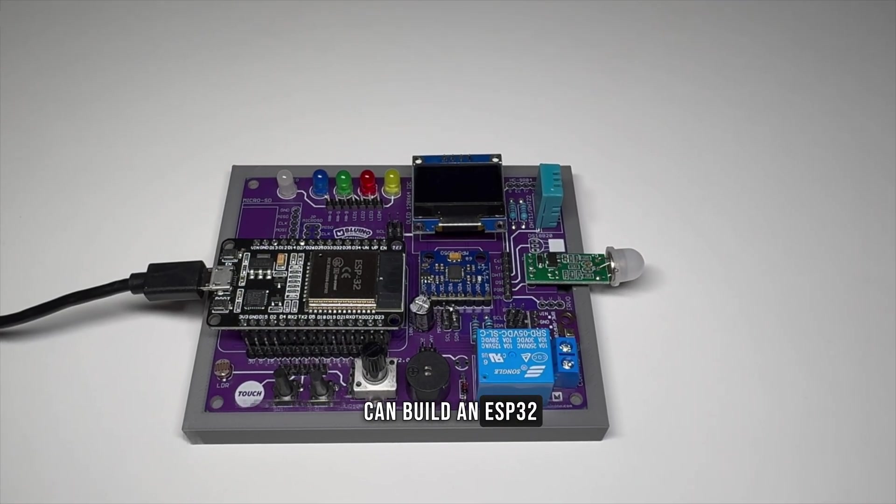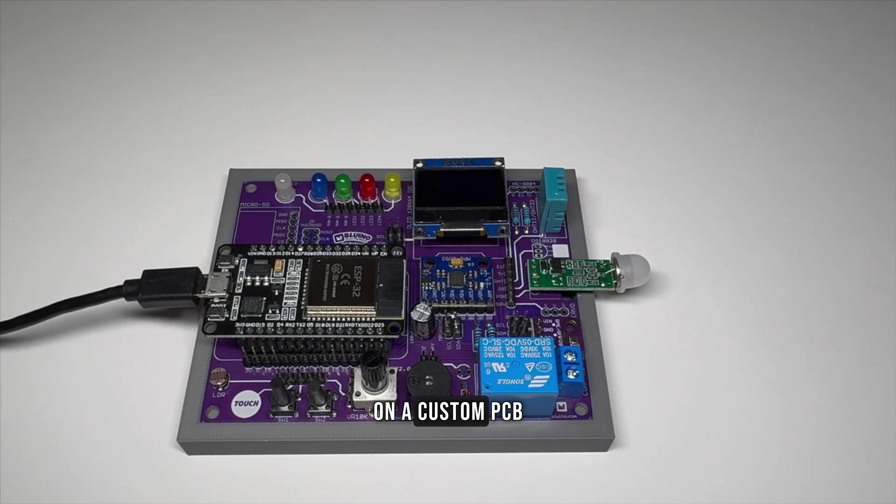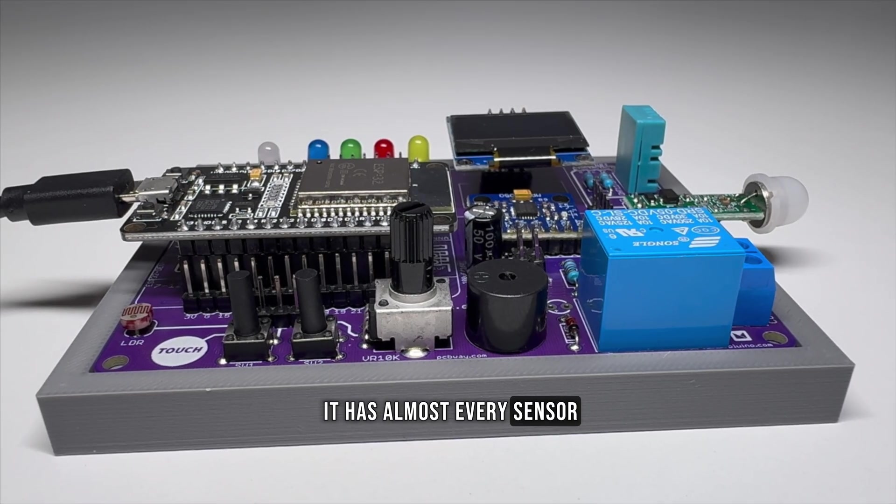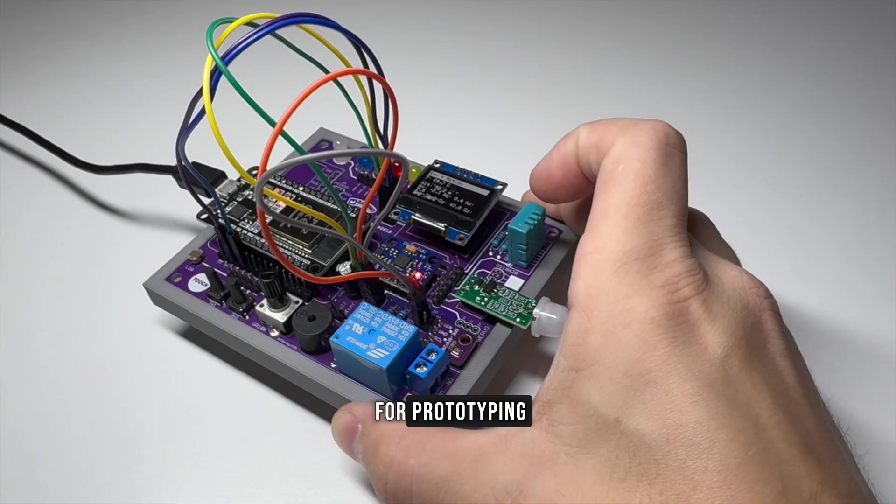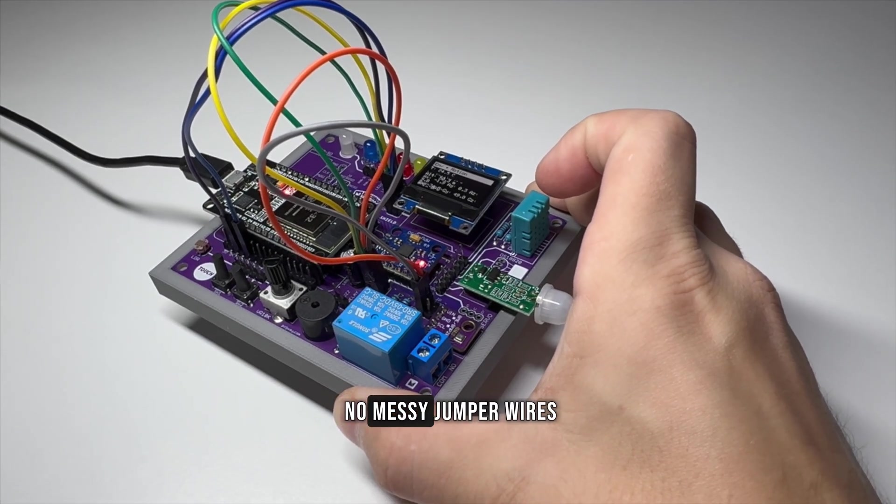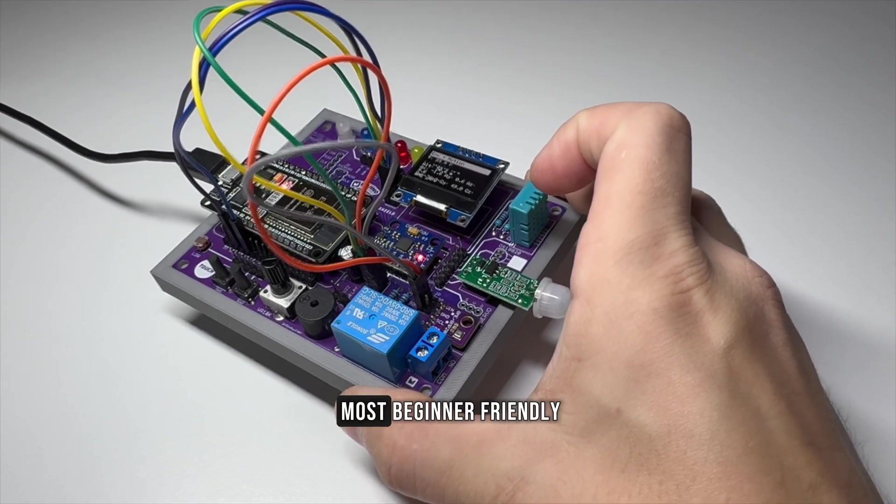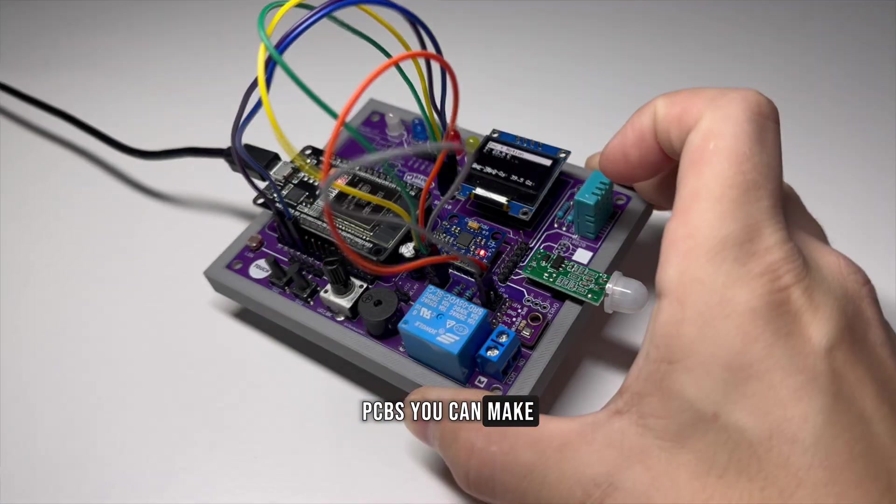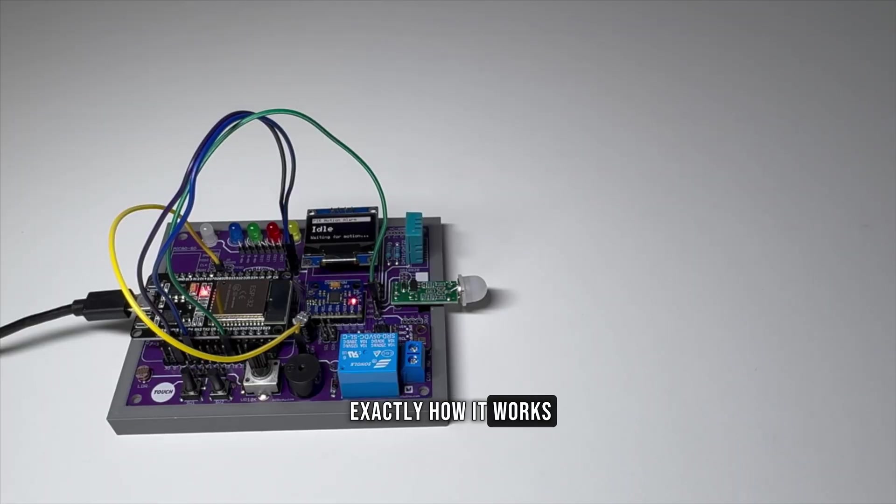This is how you can build an ESP32 IoT starter kit on a custom PCB. It has almost every sensor and module you need for prototyping, all on one board, no messy jumper wires. It's one of the most beginner-friendly PCBs you can make, and I'll show you exactly how it works.